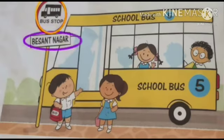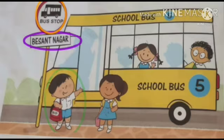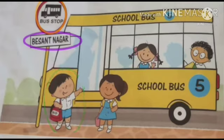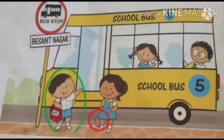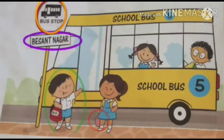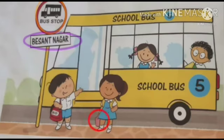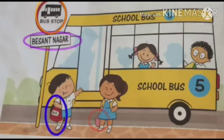There is a boy — the word 'boy' starts with B, that's why we are going to circle the boy. There is a girl, and in the hand of the girl there is a basket. The word 'basket' starts with B, that's why we circle the basket. There is one boy with a bag — 'bag' starts with B, so we circle the bag.